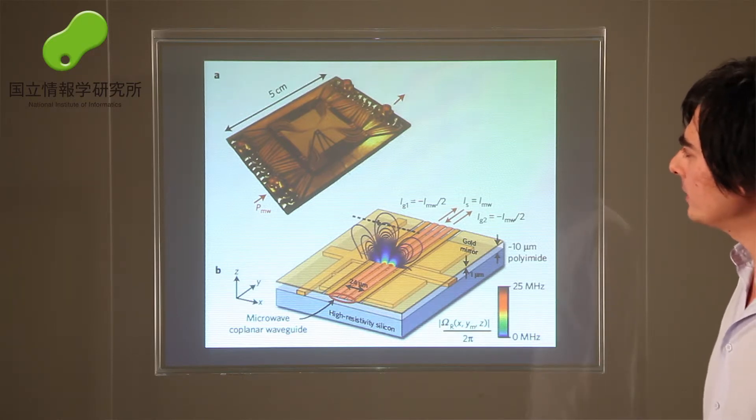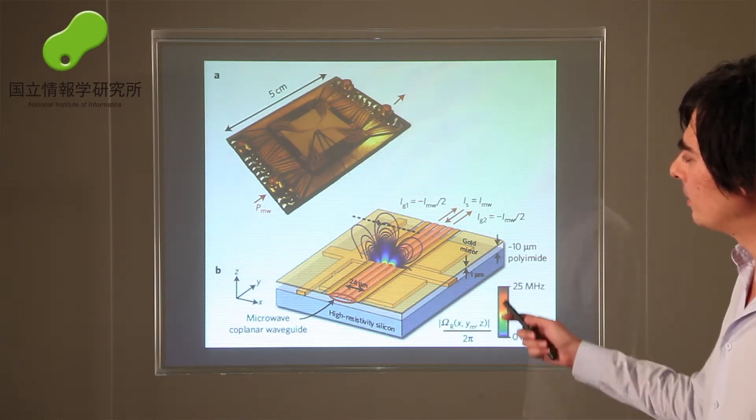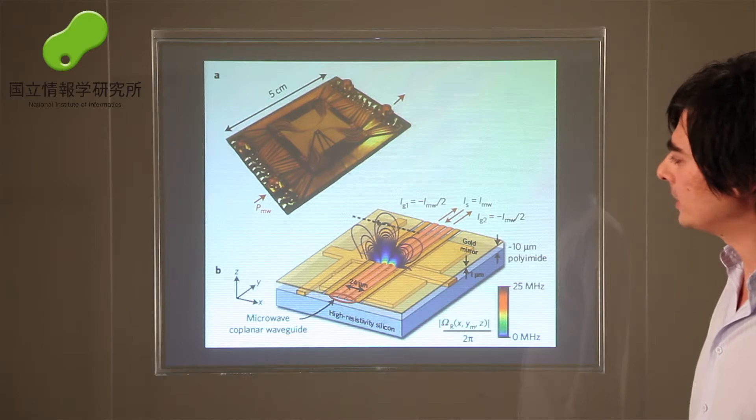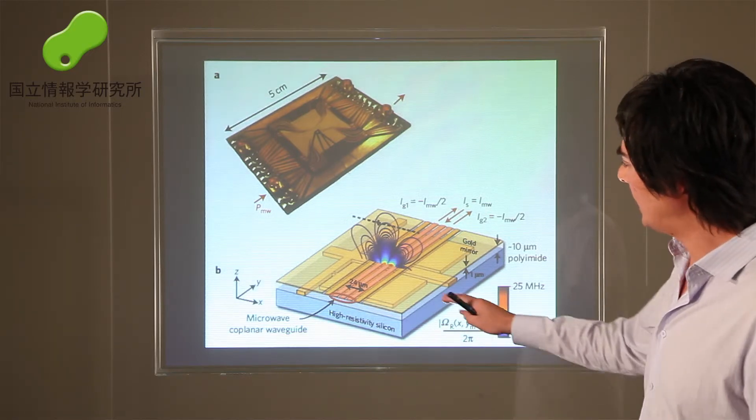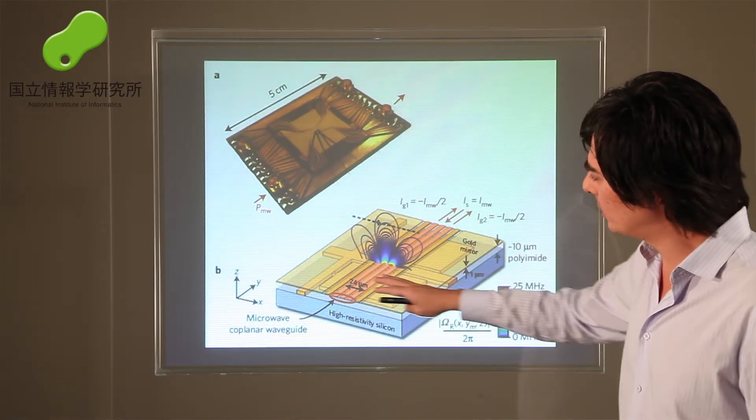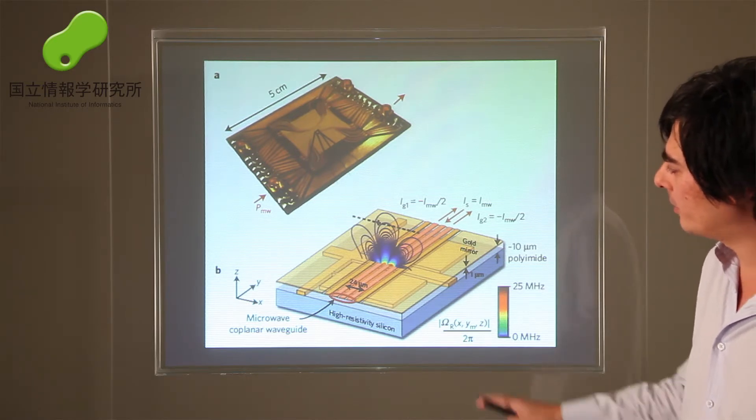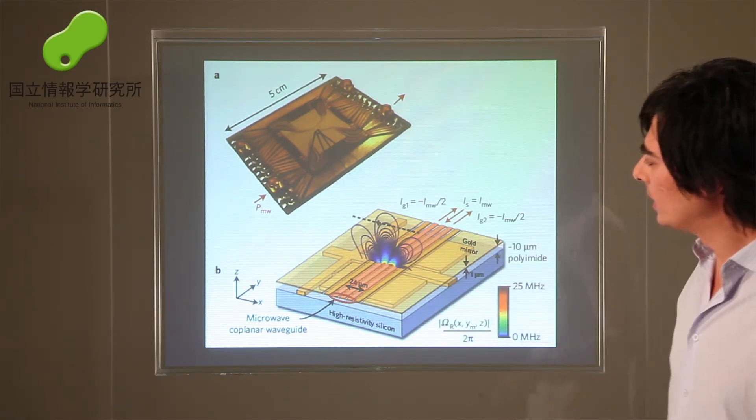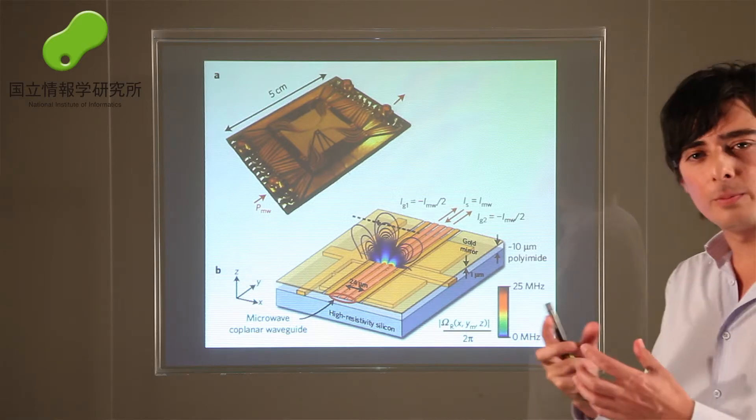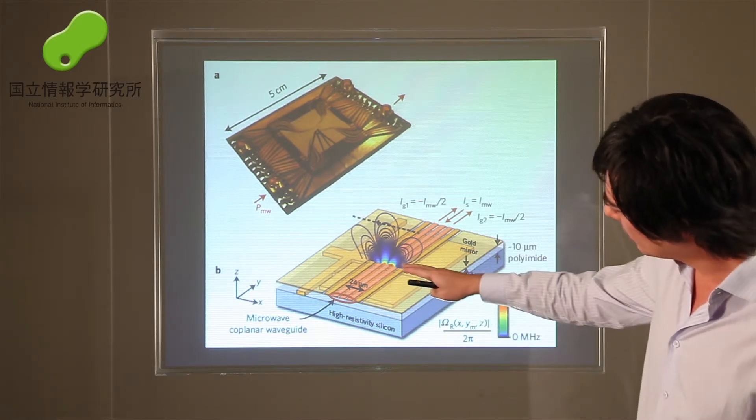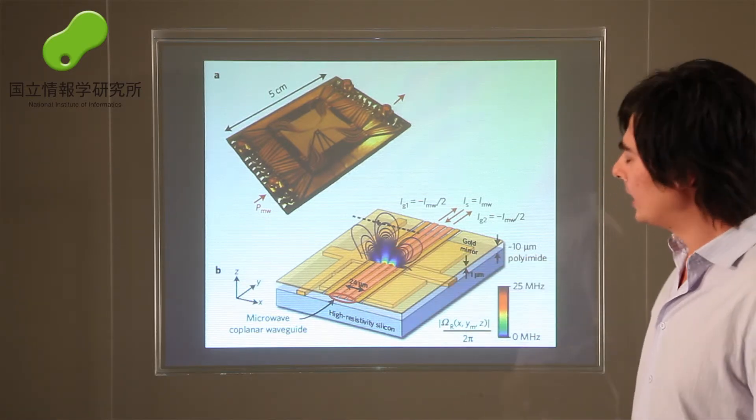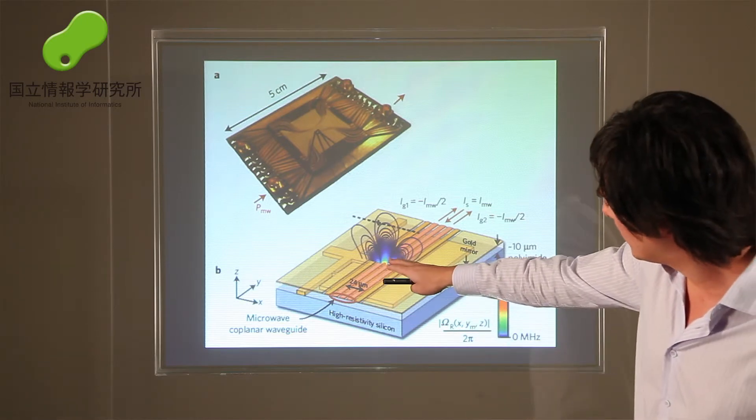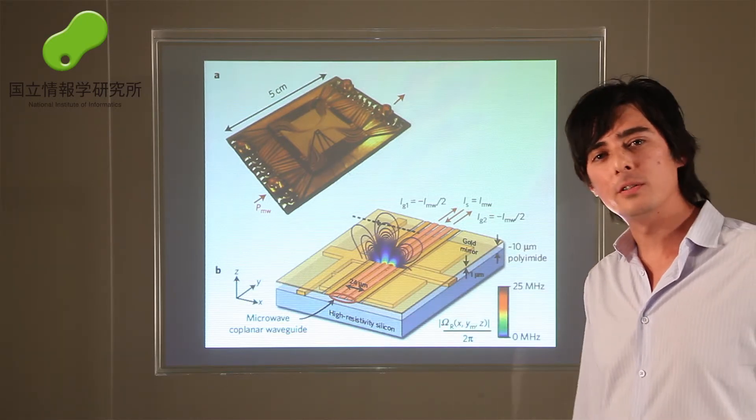This is the kind of device we use to realize Bose-Einstein condensates. You have an atomic chip where we have a very complicated array of circuits in order to control the Bose-Einstein condensate. The Bose-Einstein condensate levitates a couple of microns above the surface of this atomic chip.